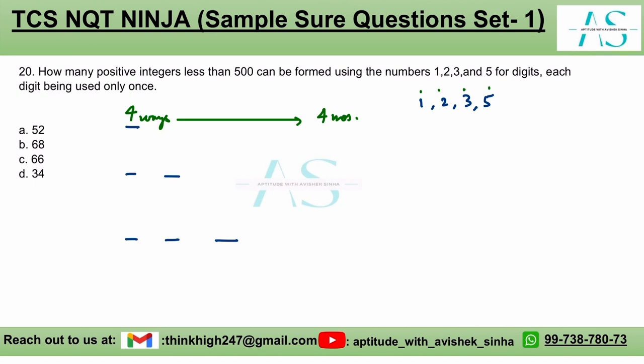Next, how many two-digit numbers? So any of the two places can be filled in four ways. Any of the next place can be filled in three ways. So the answer is 4 into 3, which is 12 numbers.